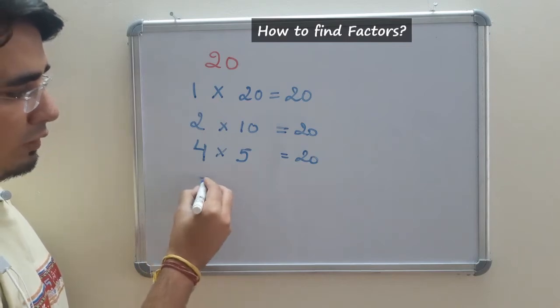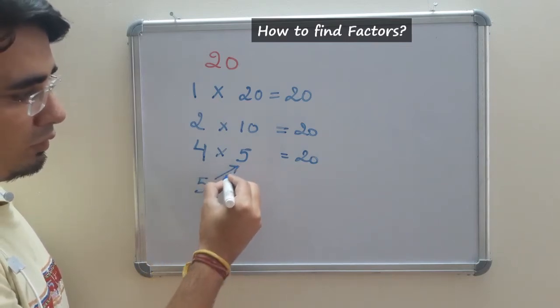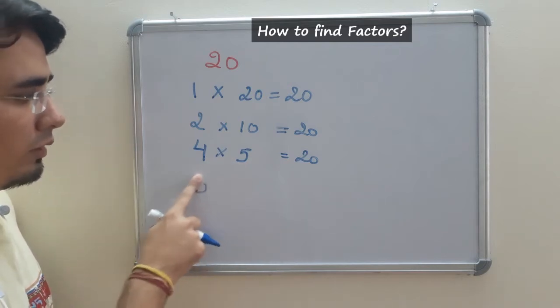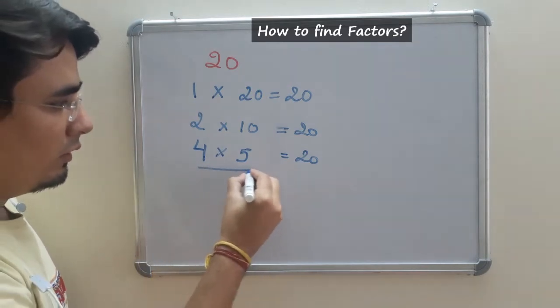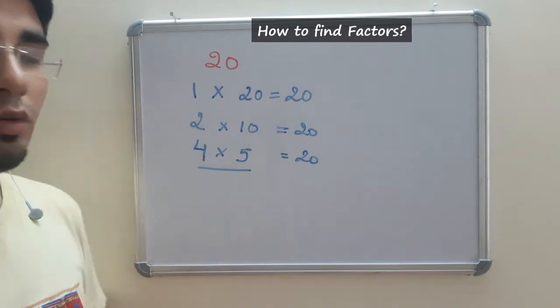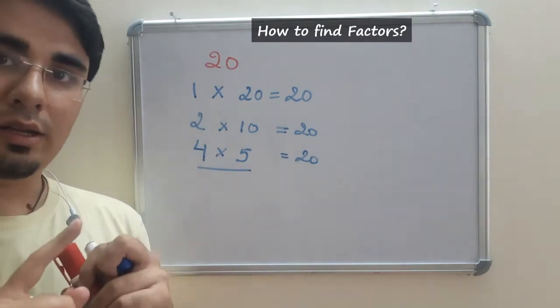What should I multiply by 5? 5 we have already taken. So we can stop over here and that's it. So it is repetition. Till when we have to do? Till the time it is getting repeated.